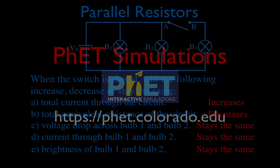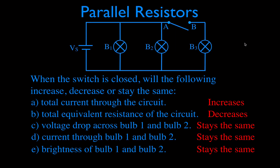This is what we're going to be talking about in this video. We want to know: when we have a simple parallel circuit and we close this switch, giving voltage across and current through this bulb, what's going to happen to the other three bulbs, the total current, and the total resistance? We want to know if those things are going to increase, decrease, or stay the same. In the previous video, I went through a full detailed description about why the total current increases, why the total equivalent resistance decreases, and why the voltage drop and current through bulbs 1 and 2 — and their brightness — stay the same when the switch is closed.